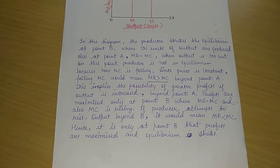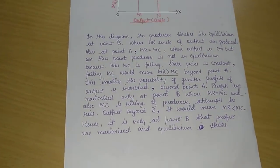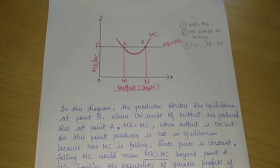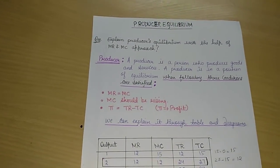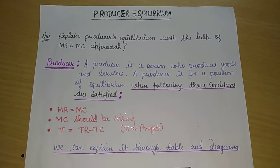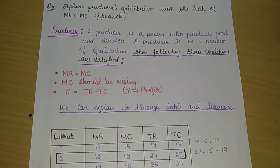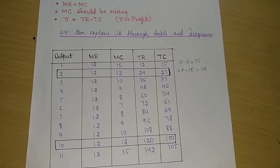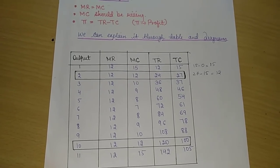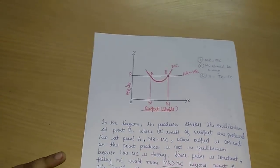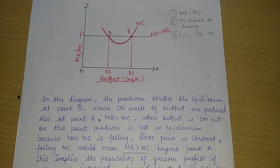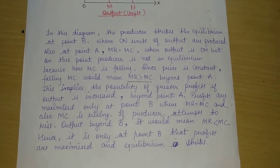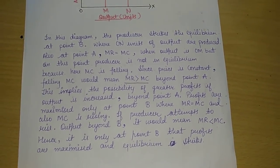So students, a complete question of Producer Equilibrium — whether it comes for six marks or four marks — you will have to do a complete attempt. Let's recap what we have done: first, we gave the definition of producer; then we gave the three conditions — MR equal to MC, MC rising, and profit as TR minus TC; then we made a table showing MR, MC, TR, TC; and we made a diagram with its explanation. Producer Equilibrium is now complete.